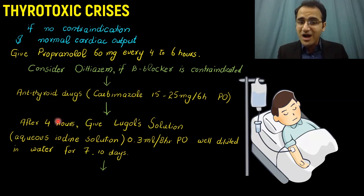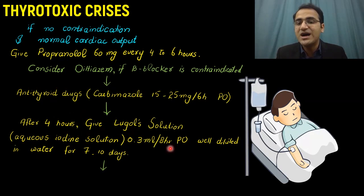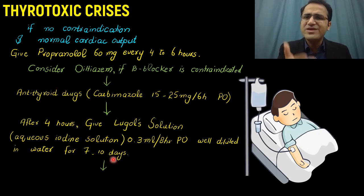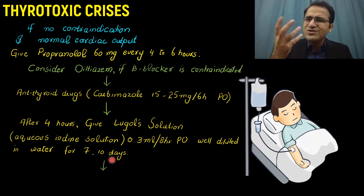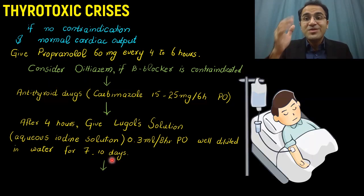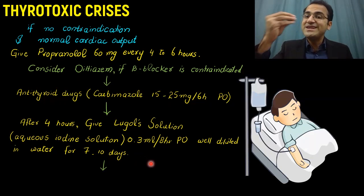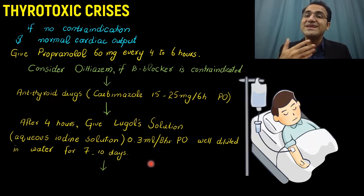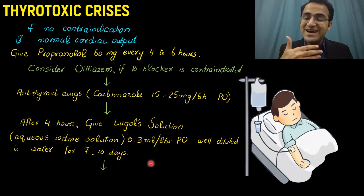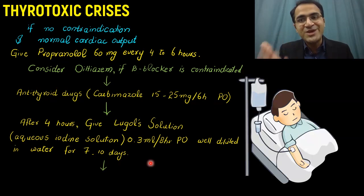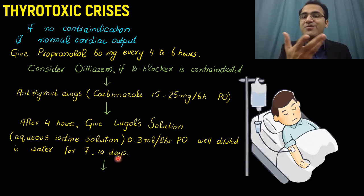After 4 hours, you can give Lugol's solution, which is an aqueous iodine solution — 0.3 ml every 8 hours orally, well diluted in water, for 7 to 10 days. The reason we give iodine despite the patient already being in thyrotoxic crisis is an effect called the Wolff-Chaikoff effect: giving an excessive amount of iodine from outside inhibits the uptake of iodine in the thyroid gland, thereby inhibiting thyroid hormone production.